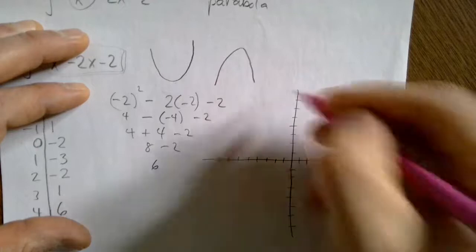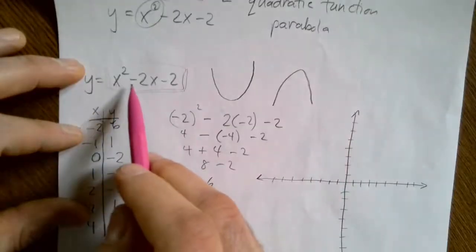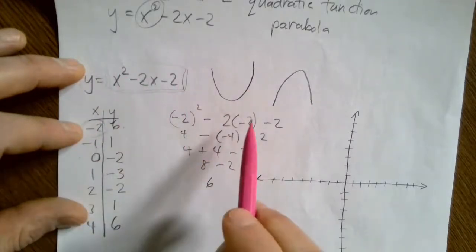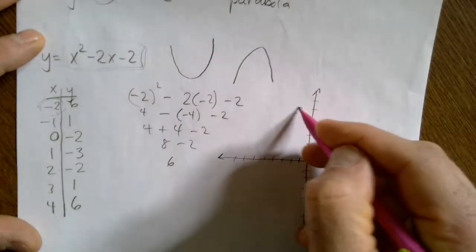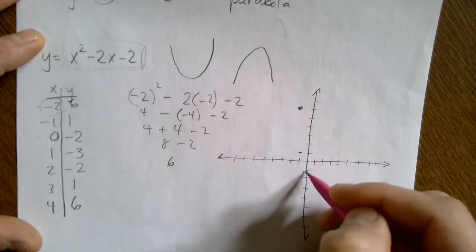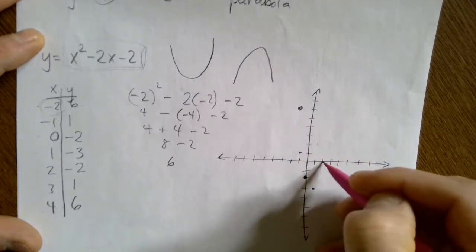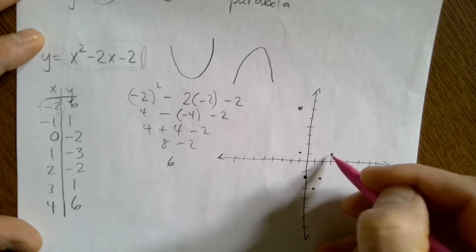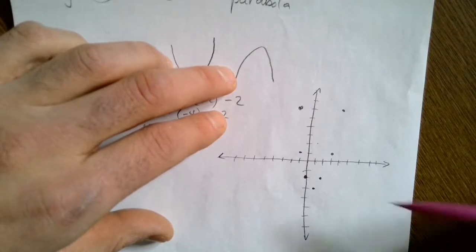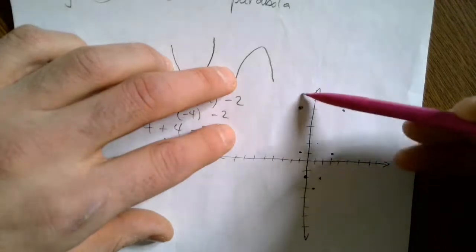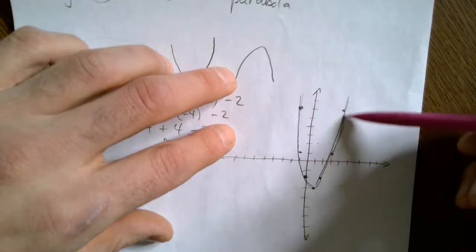We're anticipating the parabola shape — we already know it's going to be a curve because the equation has x squared. Let's plot our points: (-2, 6), (-1, 1), (0, -2), (1, -3), (2, -2), (3, 1), (4, 6). You can kind of see the curve. If you just connect them with straight lines it'll look like a Frankenstein V, so smooth it out as you draw. There's our parabola.